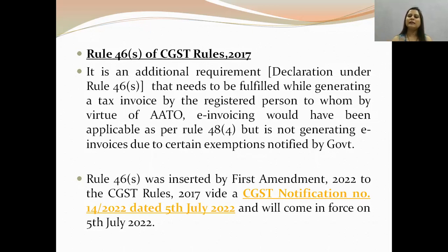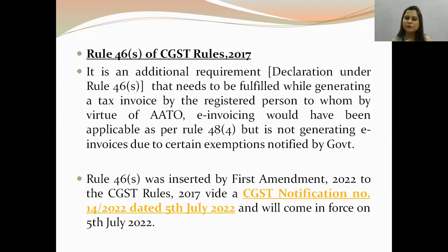What happens is that when you make your invoices and you don't make e-invoices because you are in the exempt category, there will be confusion in front of those invoices, and there were some queries about this. So they introduced Rule 46S. Rule 46S was inserted by the First Amendment 2022 to the CGST Rules 2017, vide CGST Notification Number 14/2022.